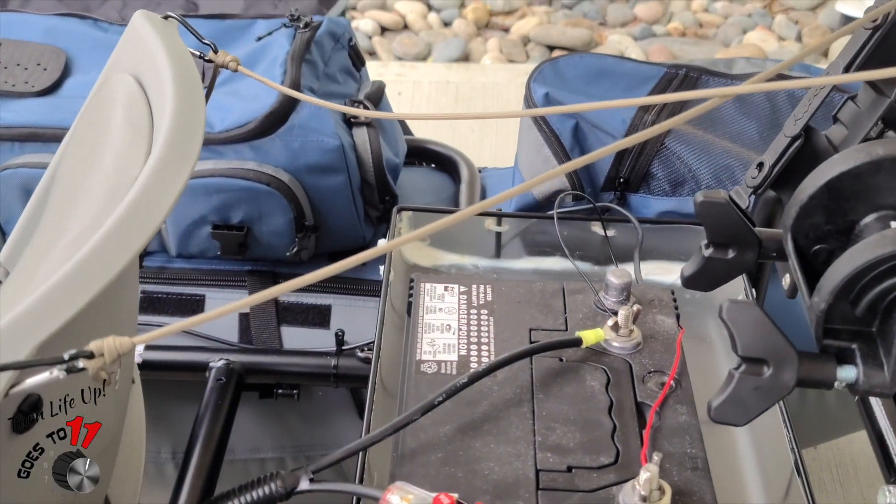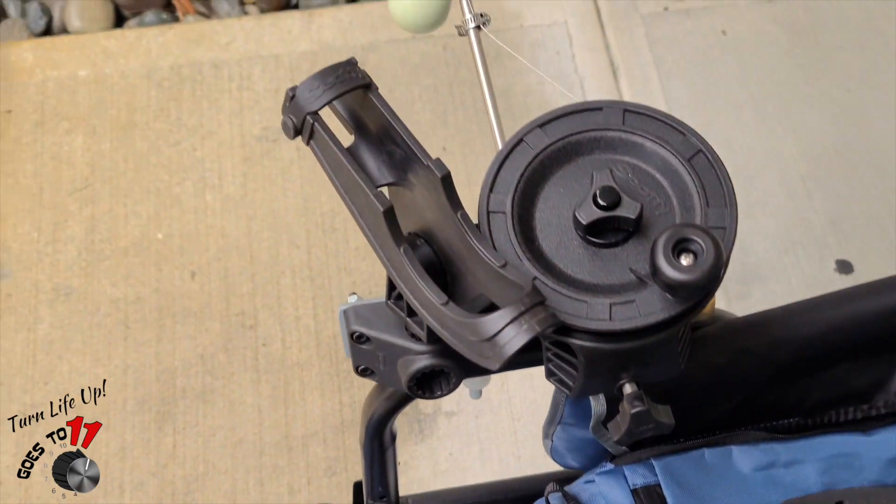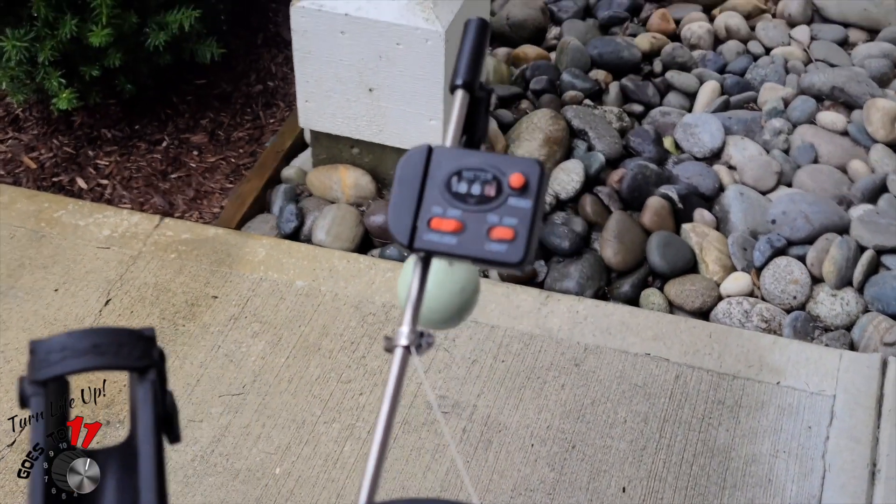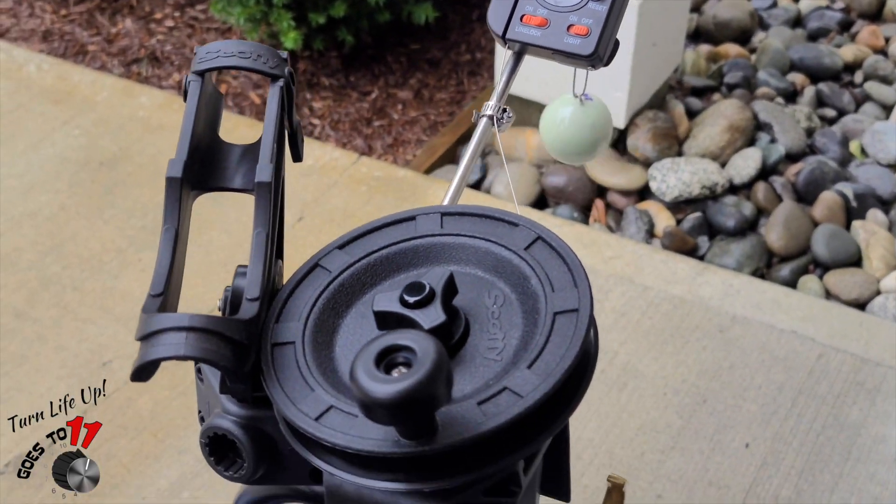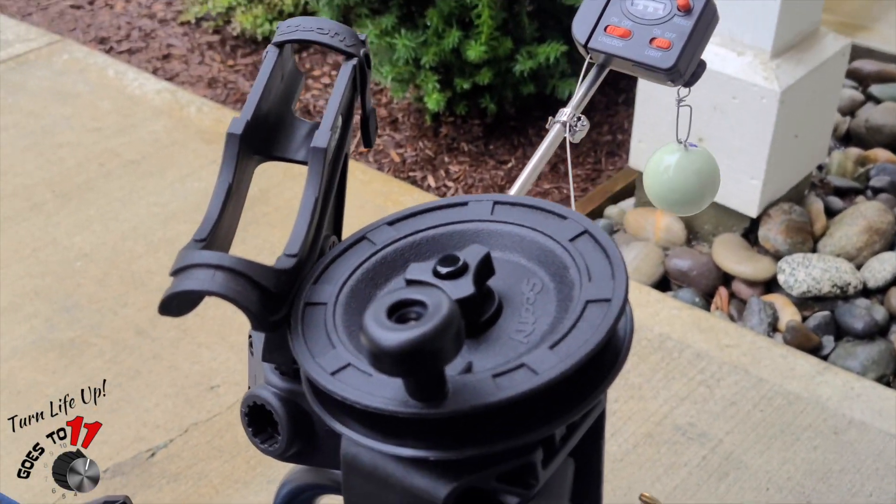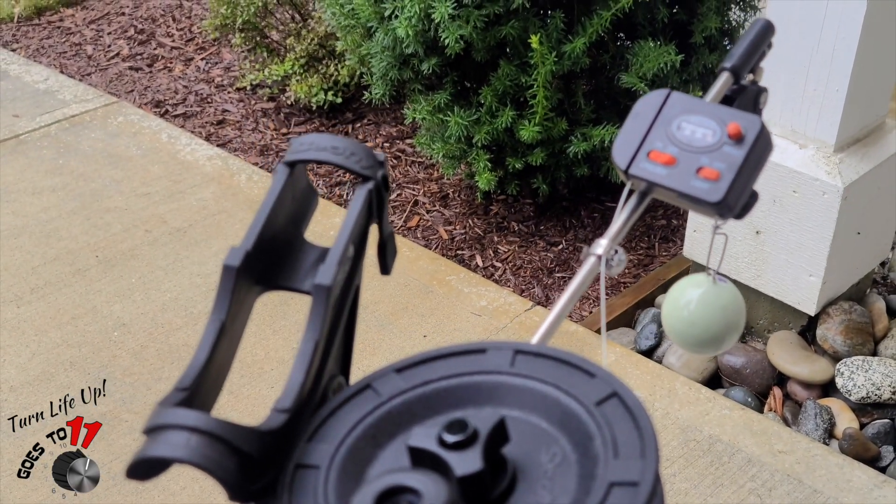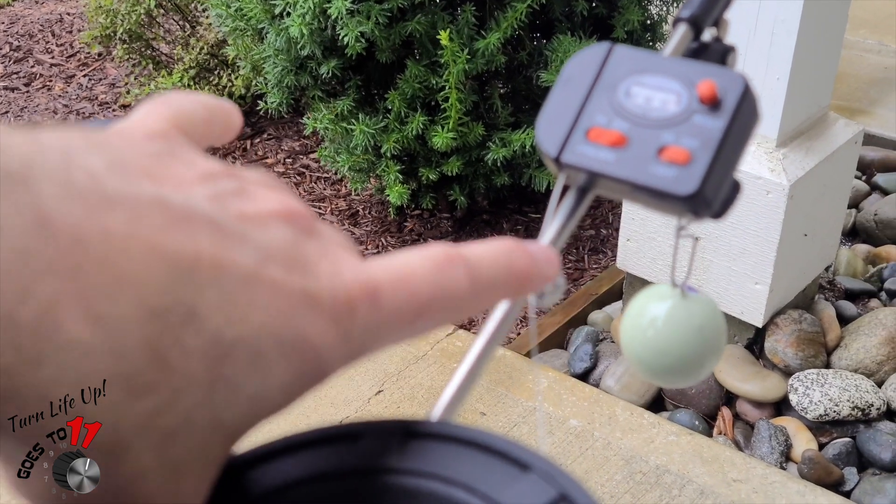We have actually set this rig up with a nice little Scotty mount downrigger and it works awesome. So what I've done is 24 ounce lead ball and you can see there's a line counter there that I got off of Amazon as well.